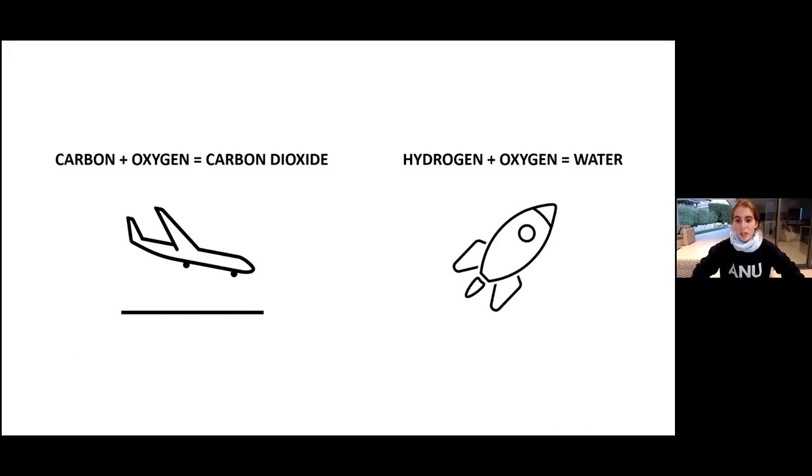But luckily rockets don't actually use a carbon-based fuel. Rockets as we've just talked about use hydrogen combined with oxygen and when you combine hydrogen with oxygen what you get is H2O. H for hydrogen, O for oxygen, so you get water. So actually when it burns it's not creating those terrible carbon emissions, it's creating just water which is much better for the environment.